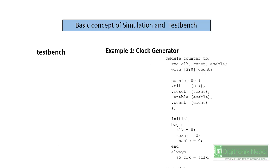Here is a basic example of a test bench for a clock generator. This clock generator consists of a module definition called 'counter_test_bench' and has some registers and wires. The segment 'counter u0' is also called the device under test — this is the main module or component of the counter being simulated. The clock port is mapped with clock, reset is mapped with reset, enable is mapped with enable, and count is mapped with the wire count.